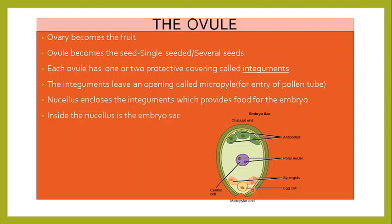The integuments leave an opening, and this opening is known as the micropyle. It is for the entry of the pollen tube carrying the pollen grain. The nucellus encloses the integuments — you can see the next layer here, which is the nucellus. The function of the nucellus is to provide food for the growing embryo. This central light-colored portion is known as the embryo.